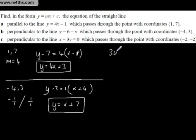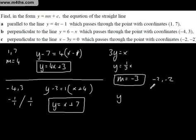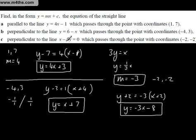For the next perpendicular line, we rearrange to get 3y equals x, so y equals one third x. The gradient is 1 third, so the perpendicular gradient M is negative 3. The line goes through (minus 2, minus 2), so y plus 2 equals minus 3 times (x plus 2), giving y equals minus 3x minus 6 minus 2, which is y equals minus 3x minus 8.